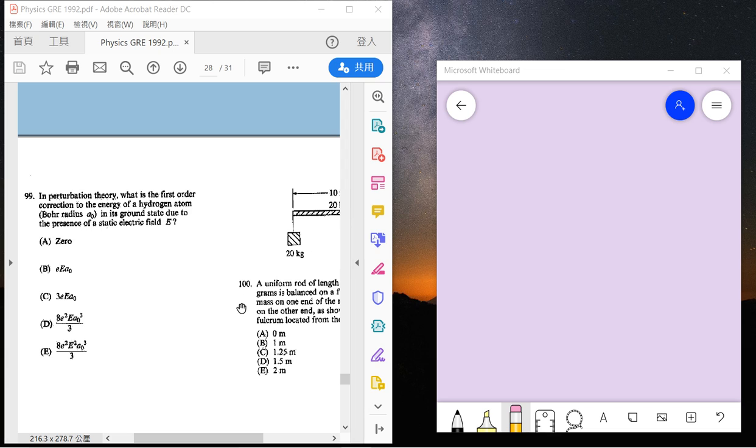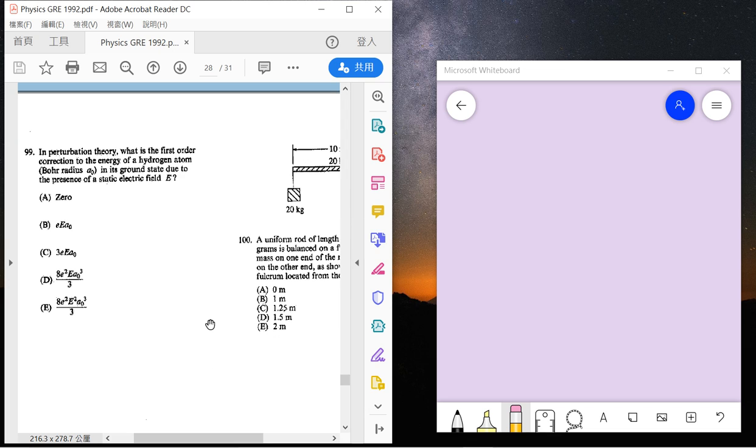Welcome guys, we're solving physics GRE. These are the final two questions. The perturbation theory question is about the hydrogen atom ground state with the presence of electric field E. The answer is A because there's no reason you can do perturbation theory in this subject, so you can guess the answer is A.